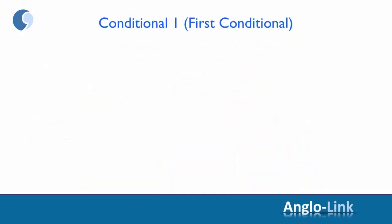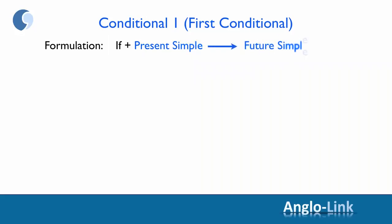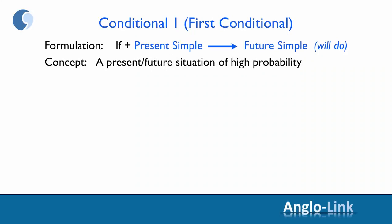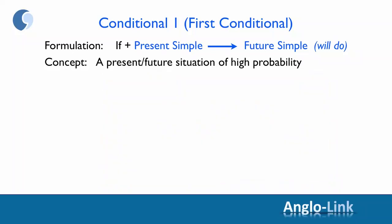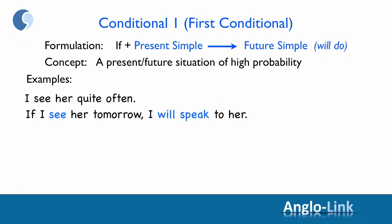Let's look at conditional one, or first conditional. The formulation is: if plus present simple, future simple. The concept of the first conditional is a present or future situation of high probability. Note that the probability is about the probability of the action in the if clause, not the other clause. For example: 'I see her quite often, so there is a high probability I will see her tomorrow. If I see her tomorrow, I will speak to her.'